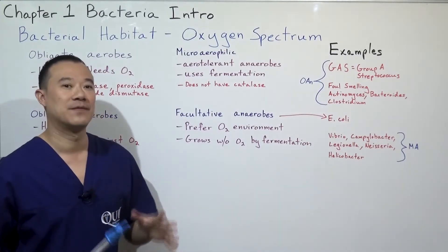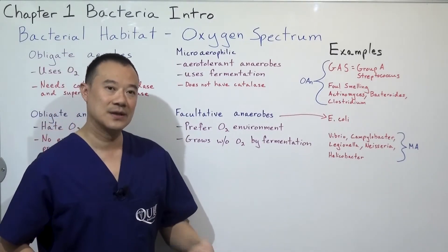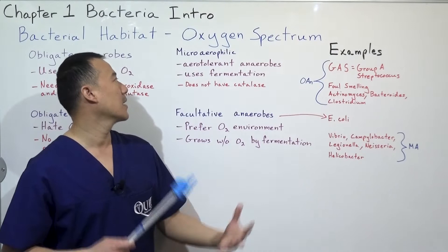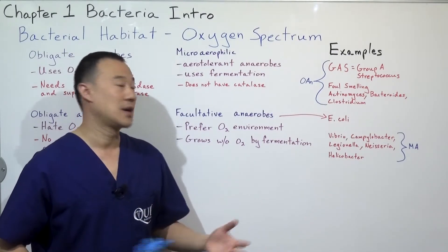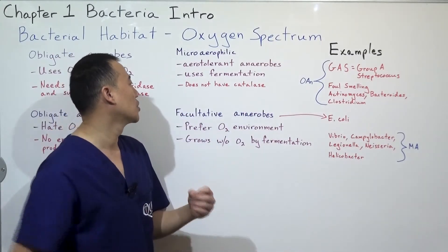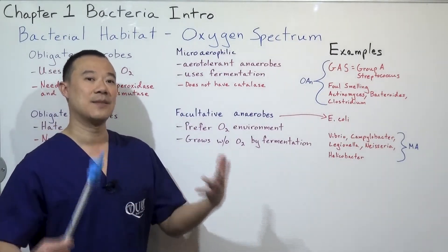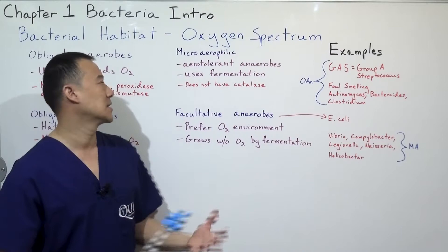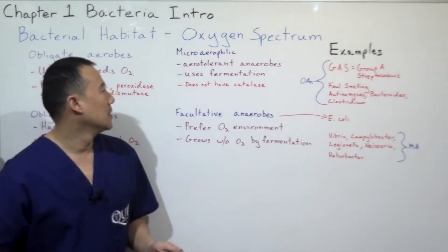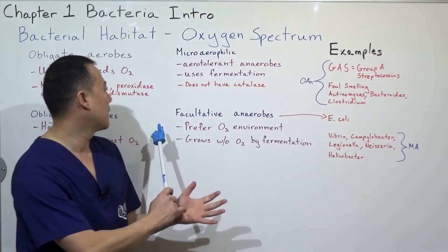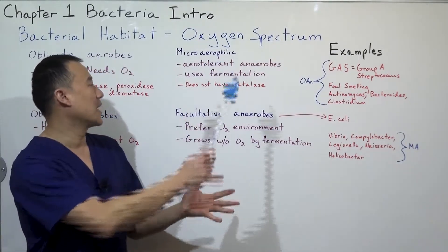Microaerophilic bacteria live in anaerobic environments but are aerotolerant — they can survive in areas with oxygen. They use fermentation predominantly. Since they can live in oxygenated environments they need some enzymes to fight oxygen products, but they do not have catalase.